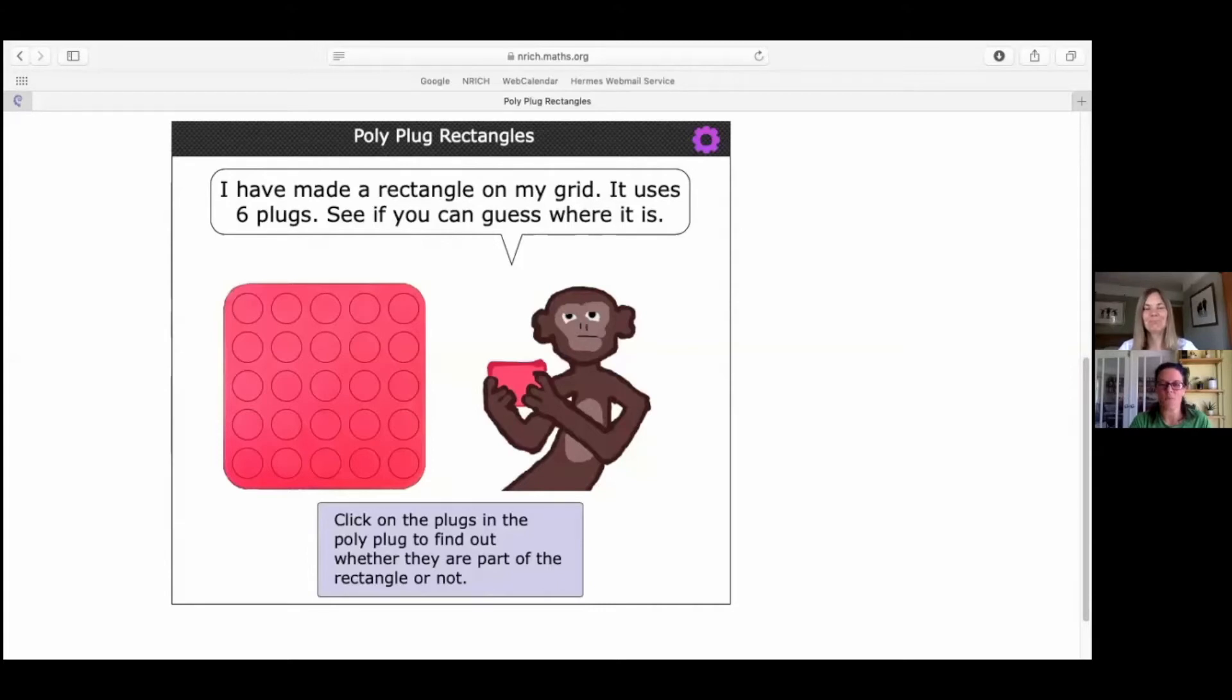Monkey likes to play a game where he hides a rectangle on this grid you can see. To begin with, he tells us how many plugs, they're the things that look like circles on your screen, make up his rectangle. So he's saying I have made a rectangle on my grid. It uses six plugs. See if you can guess where it is.